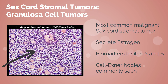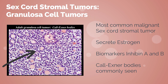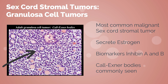Granulosa cell tumors are usually very large and unilateral. The tumors commonly secrete large quantities of estrogen; therefore, all these patients should have endometrial sampling to rule out uterine hyperplasia. Many granulosa cell tumors also release inhibin A and B, which can be used as biomarkers for this tumor. Call-Exner bodies are also commonly seen on pathology.